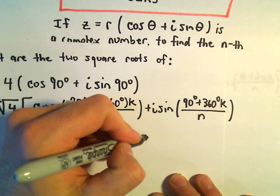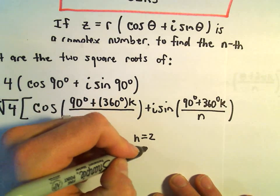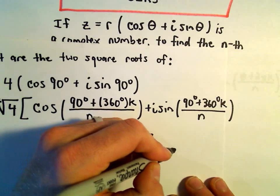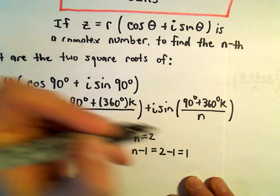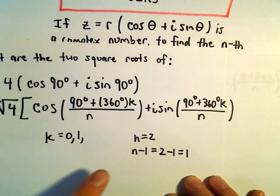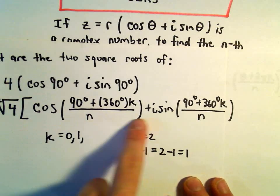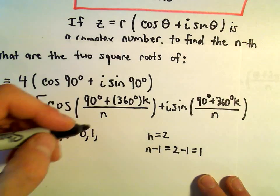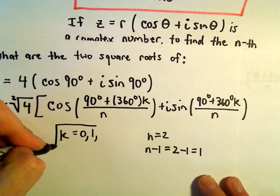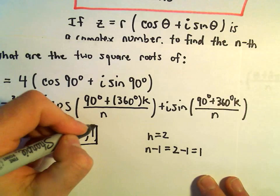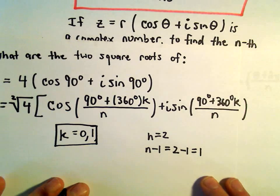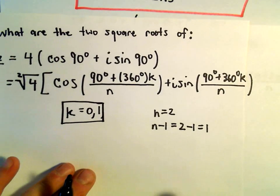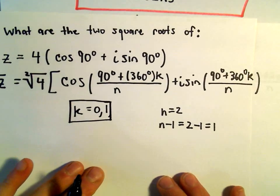Since n equals 2, n minus 1 would be 2 minus 1, or 1. So we're going to plug in the values k equals 0 and k equals 1, simplify those, and those will give us our two roots.